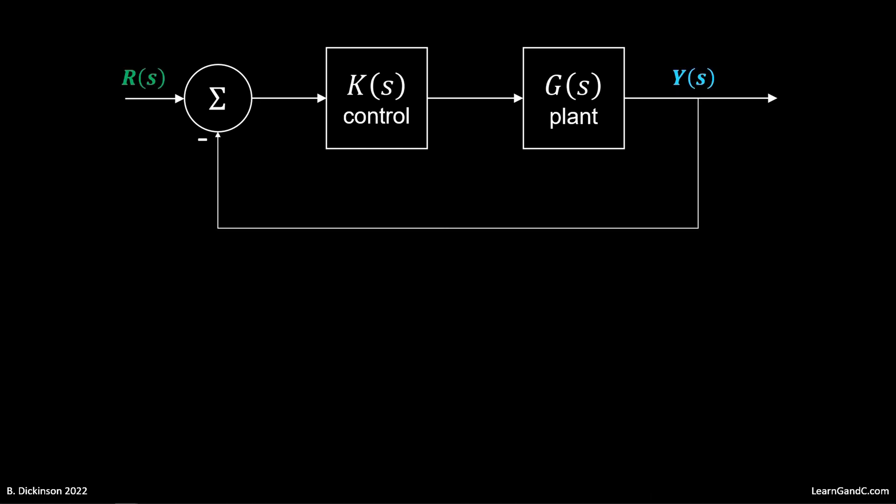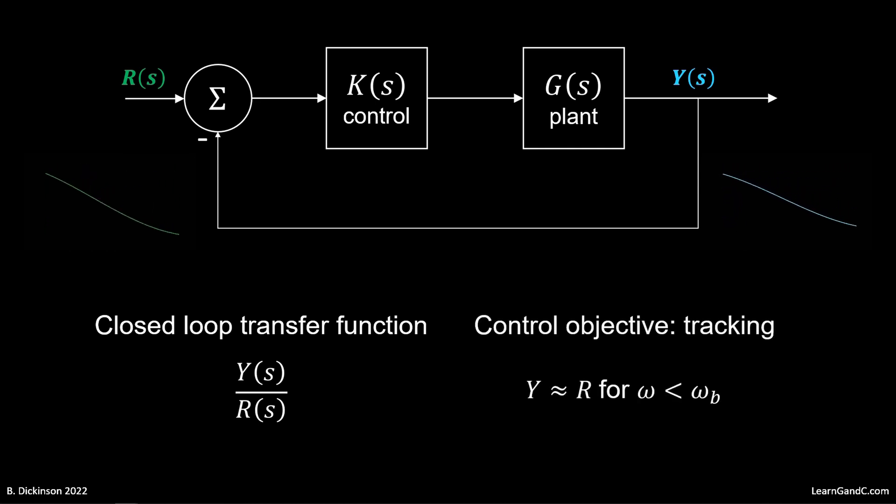The closed-loop system response involves the command input R and the response Y. The ratio of Y to R is called the closed-loop transfer function. It is characterized with sinusoidal input, where the control objective is for Y to be approximately R up to a certain frequency.